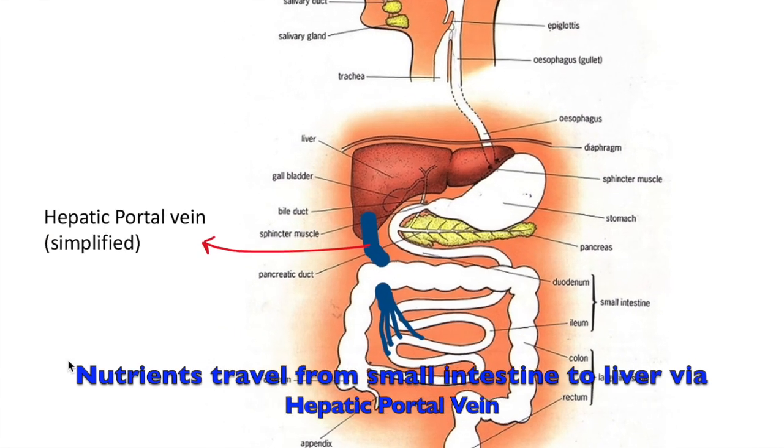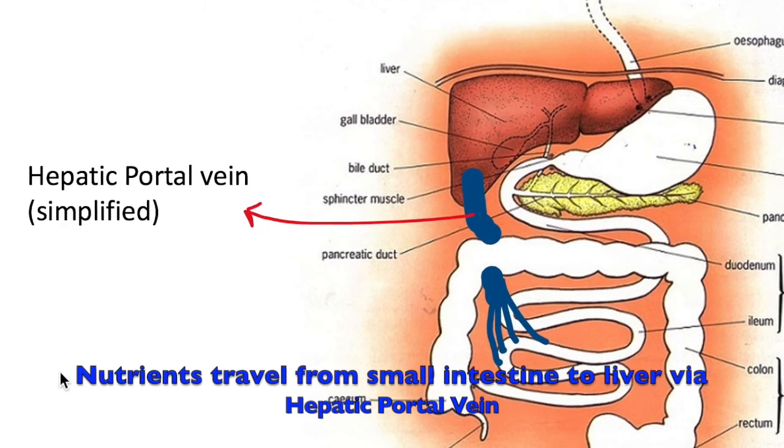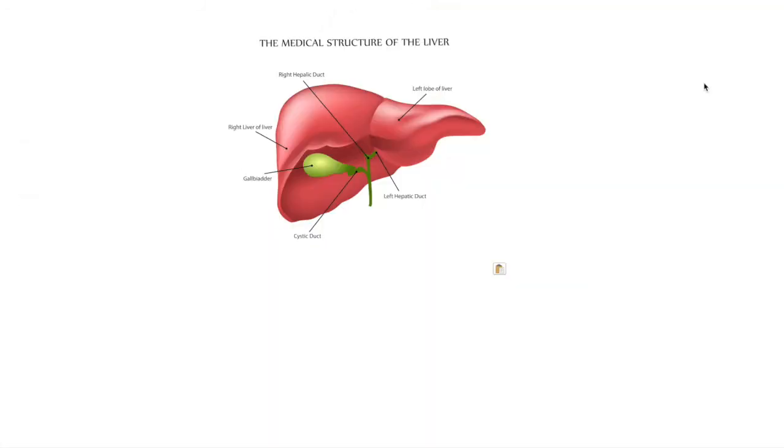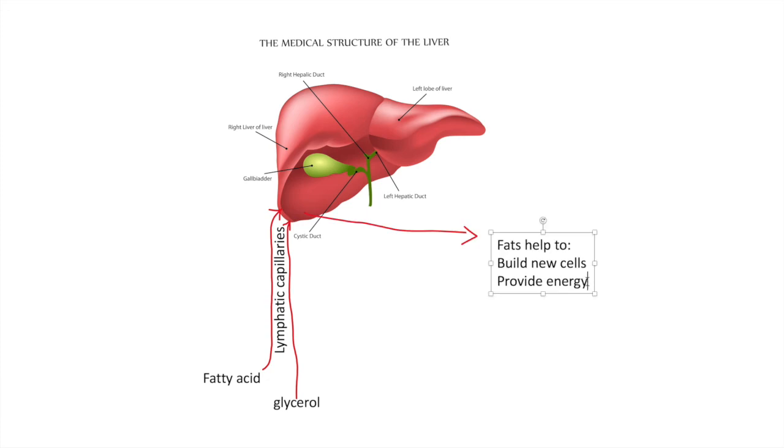Fats being absorbed, the liver will deal with it. The fat will be used to build cells, membranes, broken down for energy, or stored in fat cells or adipose tissue. They help to keep the organism warm or act as shock absorber. Of course, too much or too little has its consequences.